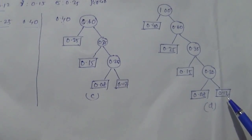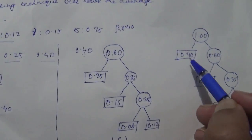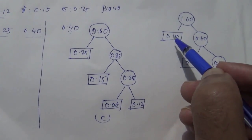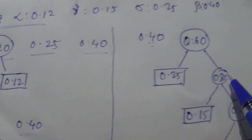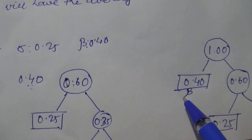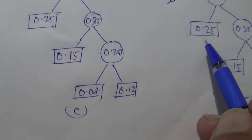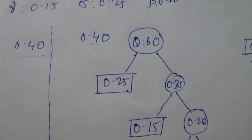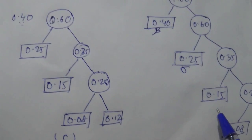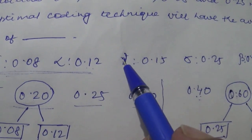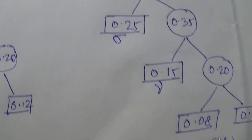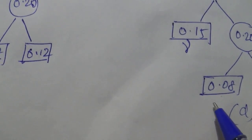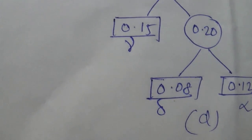Now identify the probability values with the characters. 0.40 belongs to beta, 0.25 belongs to sigma, 0.15 belongs to gamma, 0.08 belongs to delta, and 0.12 belongs to alpha. Label each leaf node in the tree accordingly.